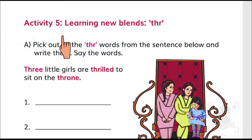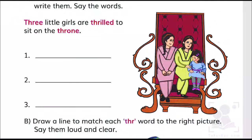Activity 5 says learning new blends. Now this time the word pattern is THR, such as 'three little girls are thrilled to sit on the throne.' So basically the sound is THR. So these are three words we are supposed to write it over here.